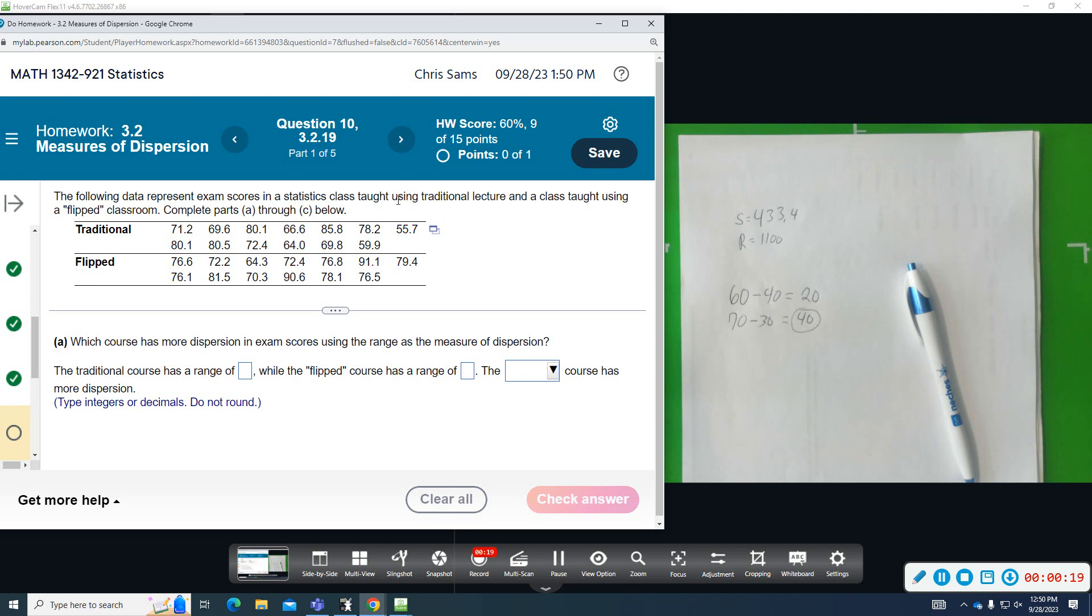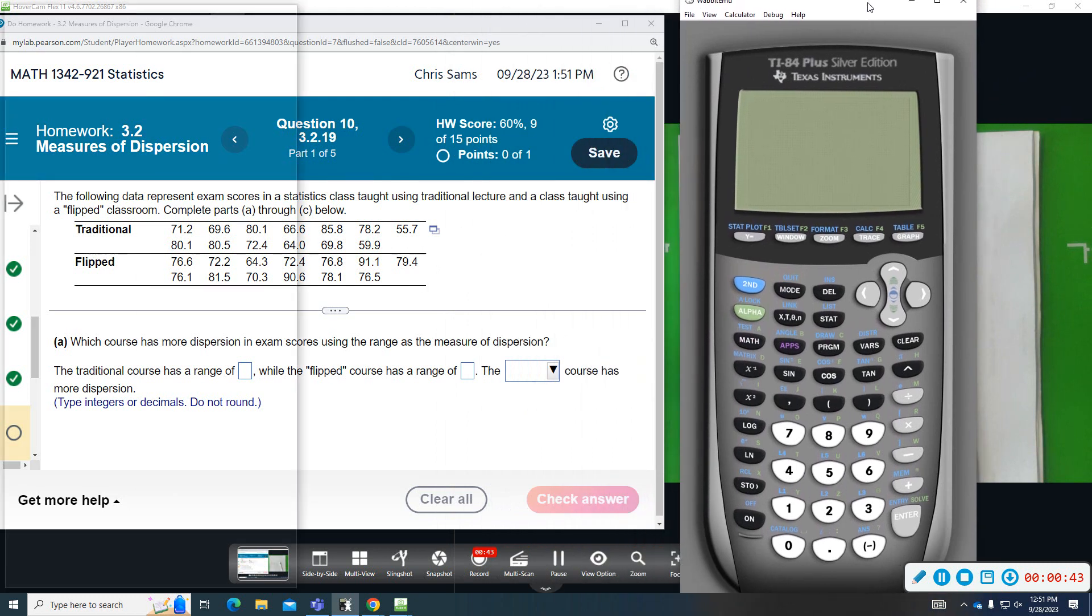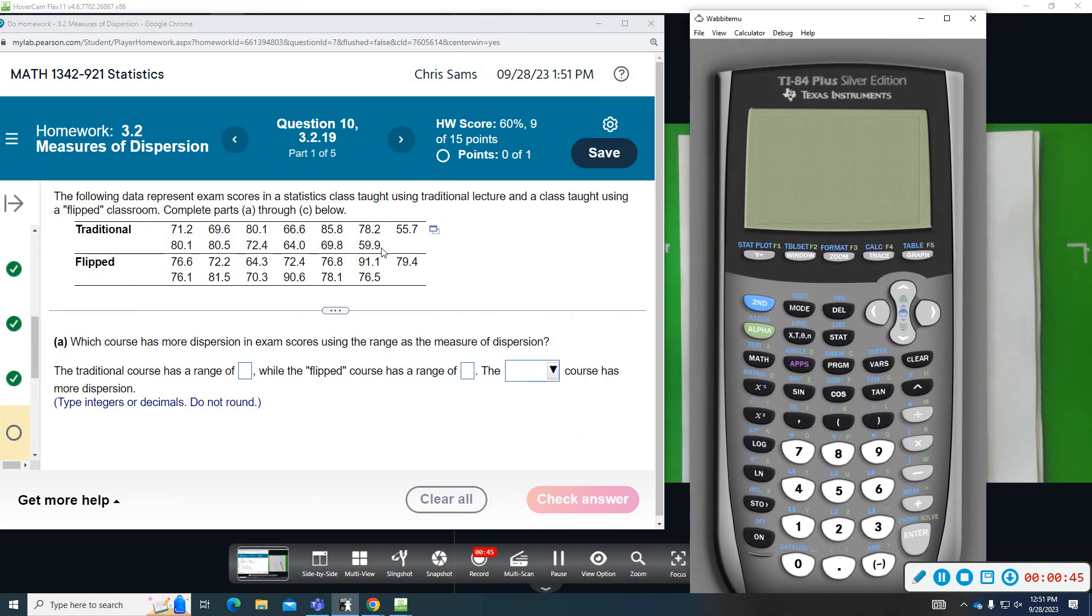So we've got two classes, one traditional, one flipped. Which class has more dispersion in exam scores using the range as a measure of dispersion? So I'm looking at these exam scores. The smallest score I see from the traditional is 55.7.